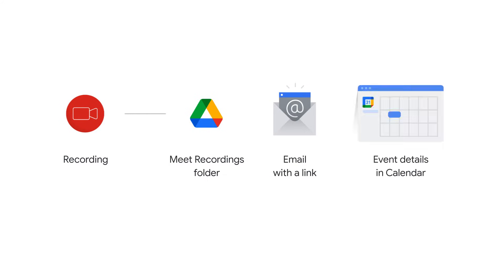If the Google Meet was created by using a calendar event and the recording is started at the scheduled meeting time, a recording link also appears in the event details, and the meeting participants from the same organizational unit automatically receive access to the recording.